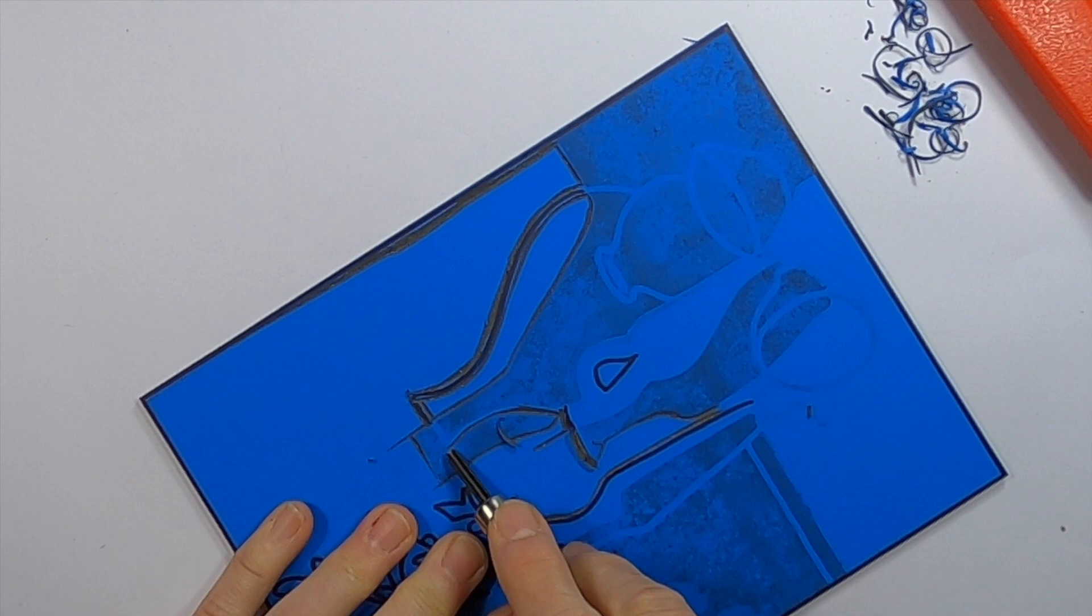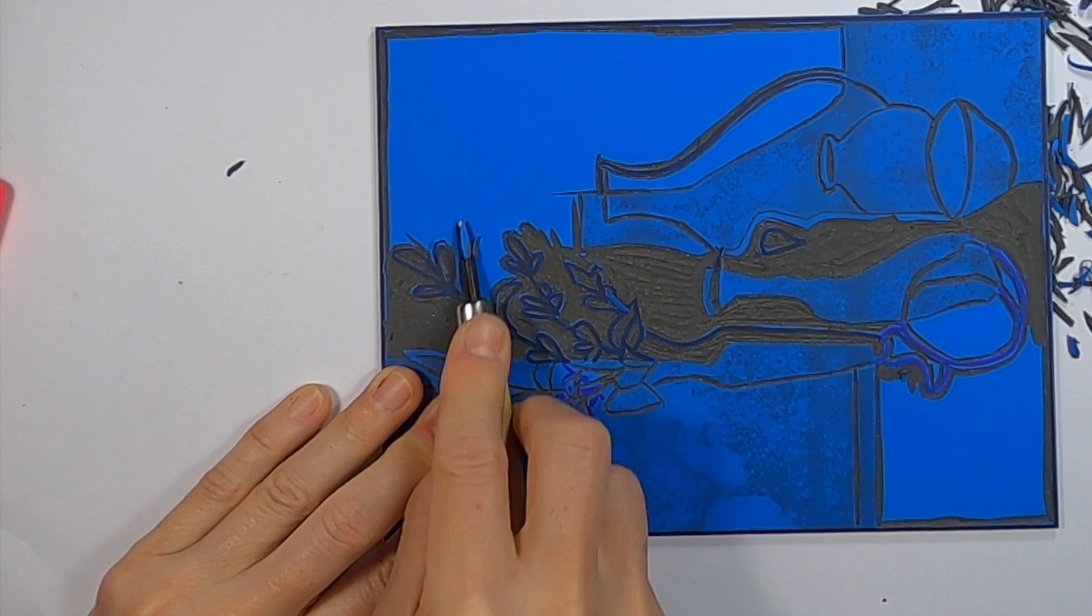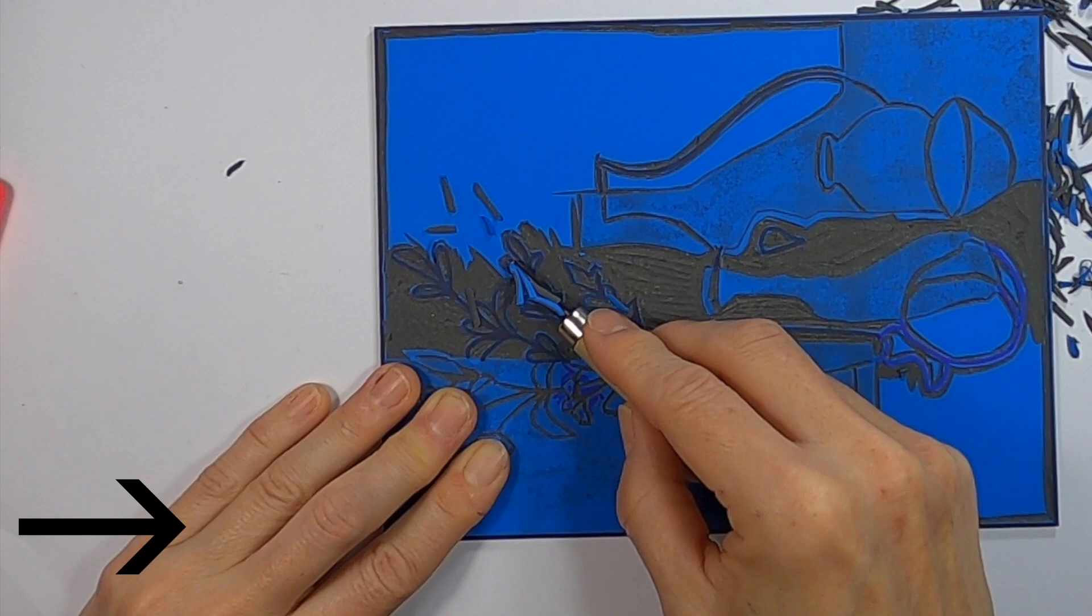A common occurrence with lino cutting is slipping. Because you need to apply quite a lot of pressure to the tool, it can sometimes slip forward, resulting in you cutting into areas that you don't intend to, or worse, if your hand is in front of the tool, it can result in cutting and stabbing your hand. So it's very important that you always make sure that your other hand, your non-cutting hand, is behind the front of the tool at all times.